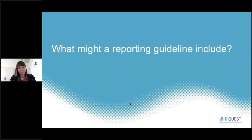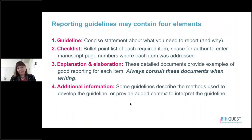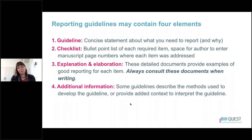What might a reporting guideline include? Reporting guidelines may contain up to four elements, depending on the guideline. The first is the guideline itself — usually a fairly concise statement about what items you need to report. The second is a checklist, typically a bullet point list of each required item with space for authors to add manuscript page numbers where each item was addressed. The third is the explanation and elaboration document — detailed documents providing information about good reporting for each item. If your guideline has one, always consult it. There may also be additional information describing methods used to develop the guideline or added context.